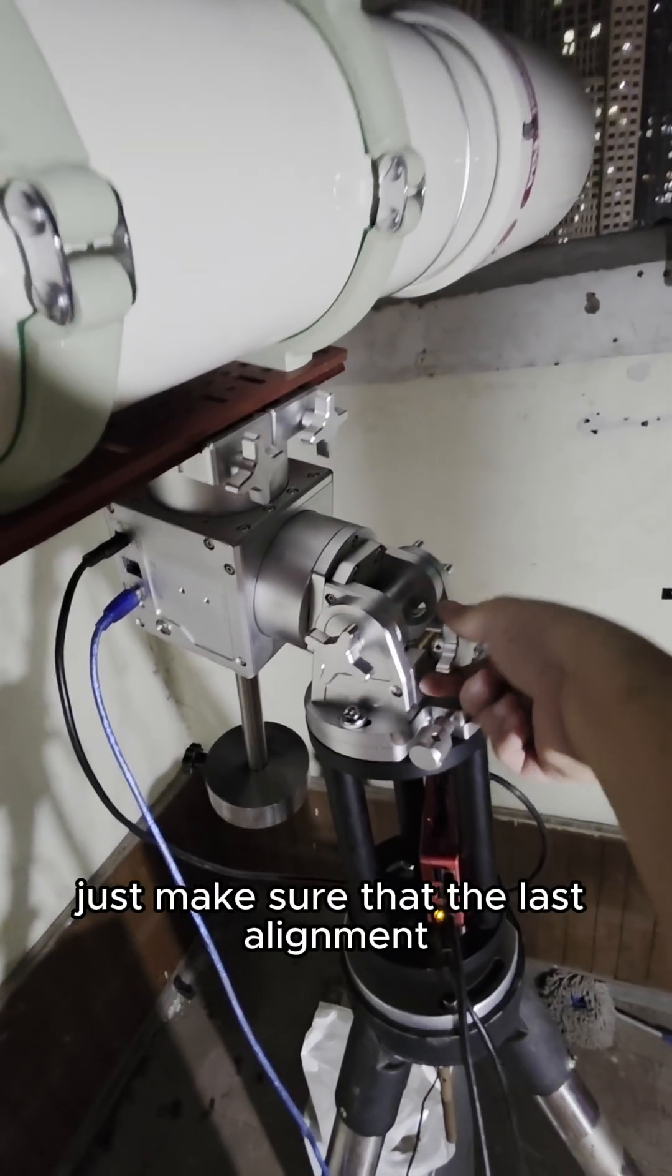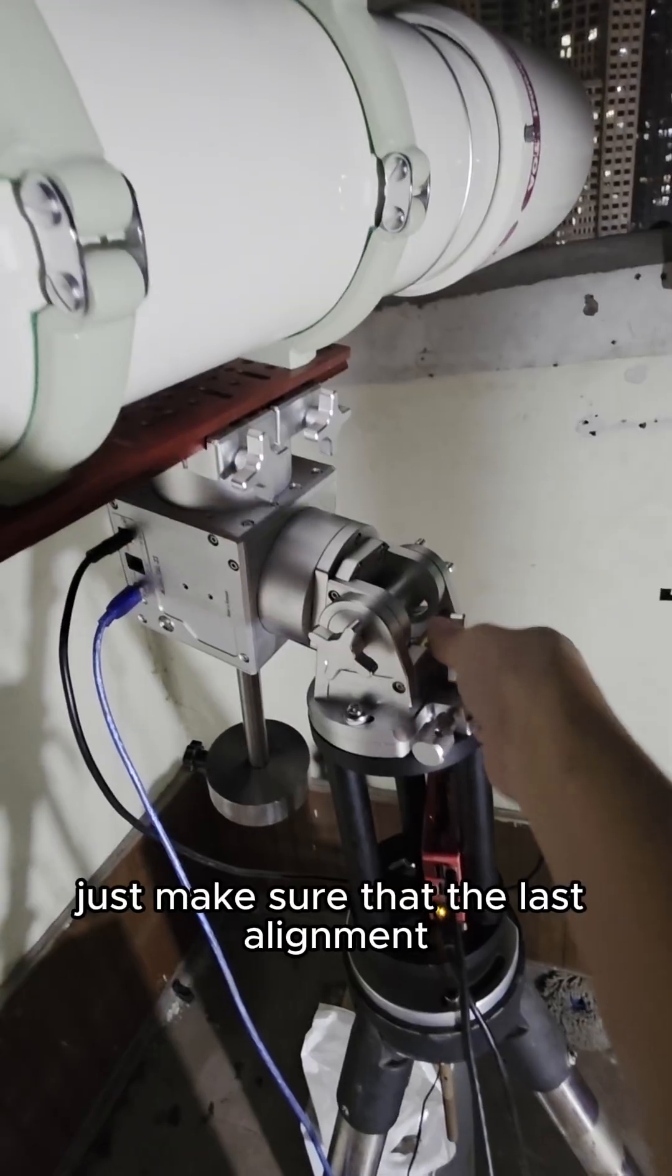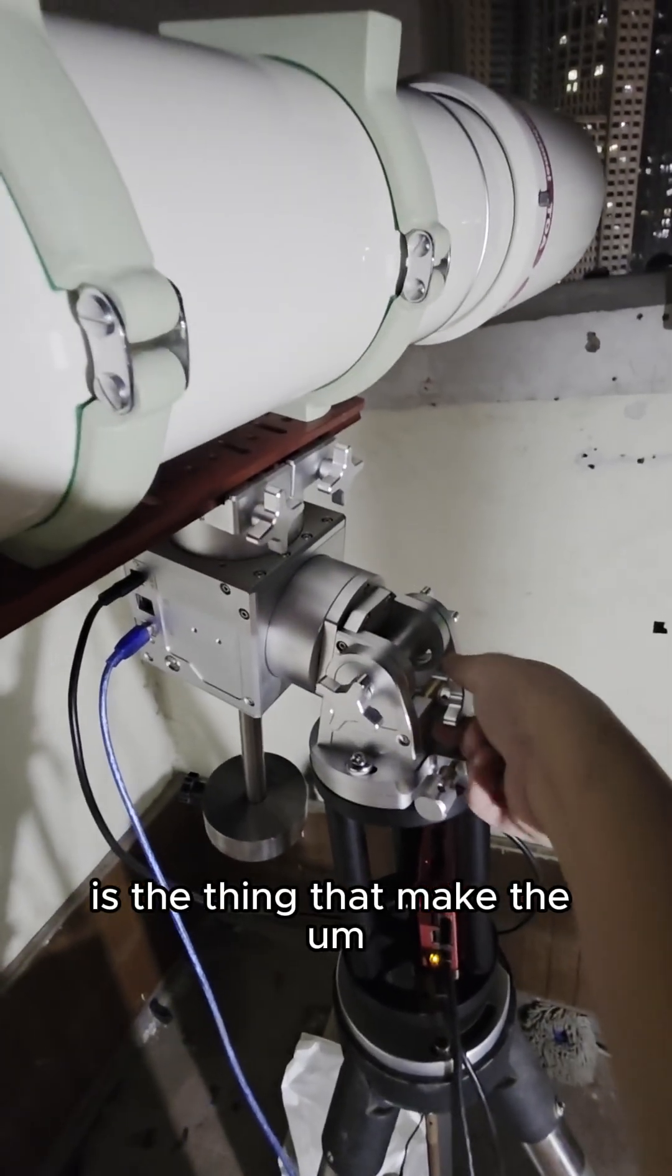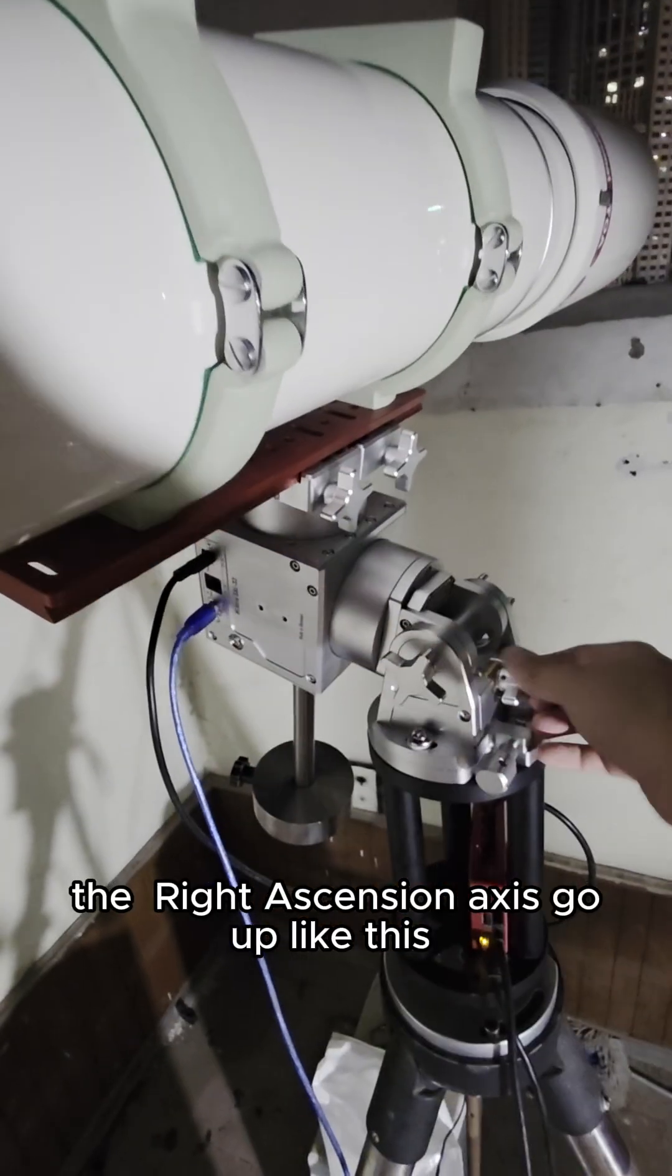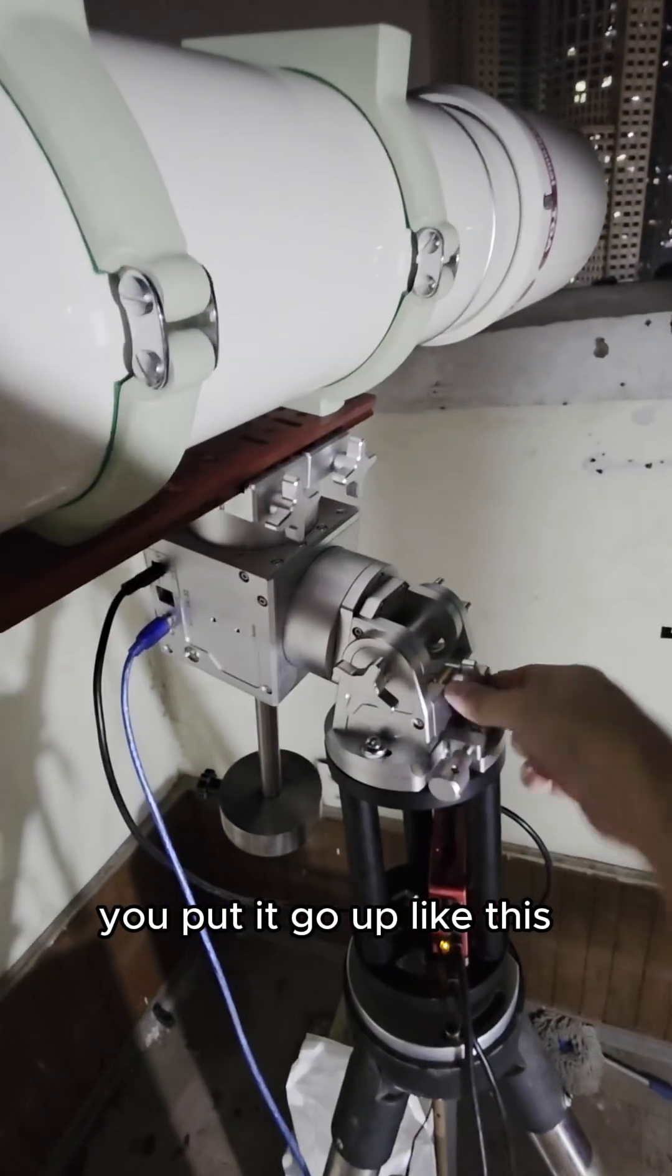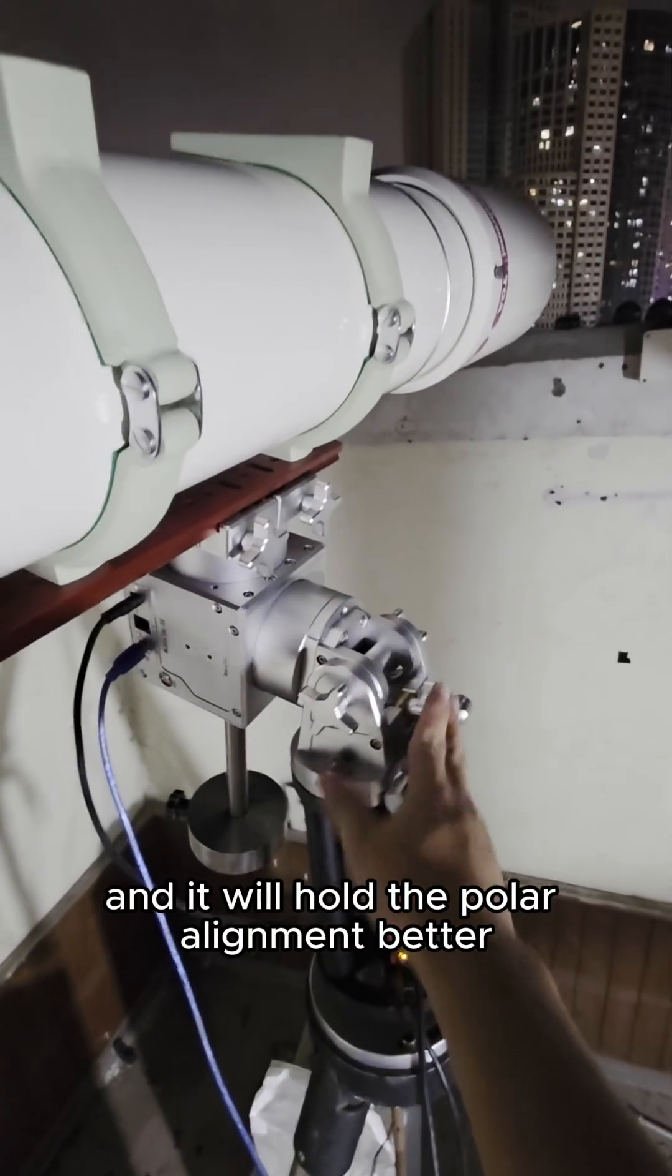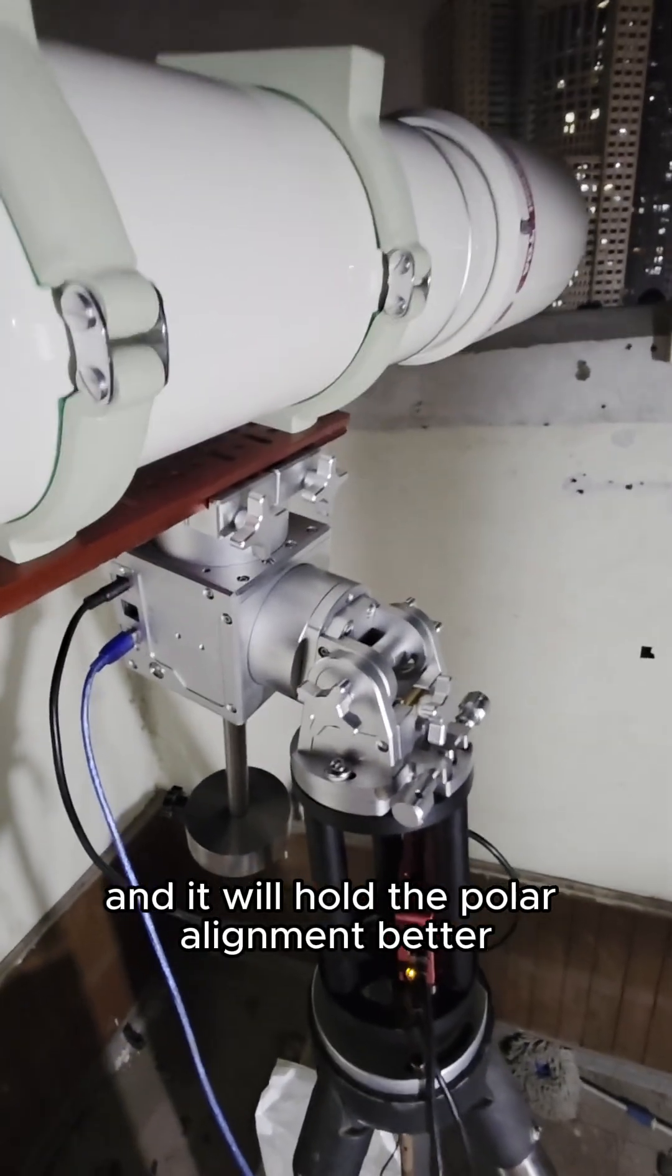Just make sure that the last alignment is the thing that makes the right ascension axis go up like this. You put it go up like this. And it will help the polar alignment better.